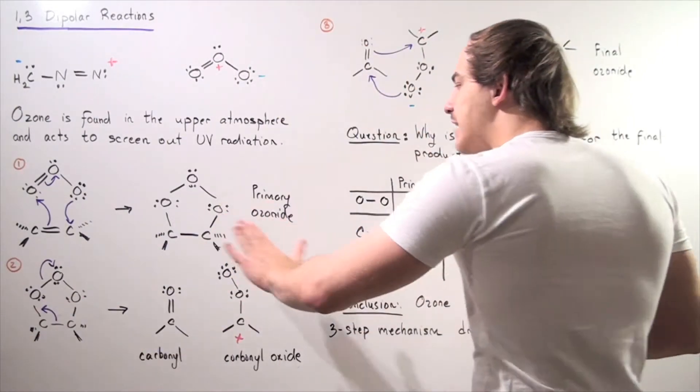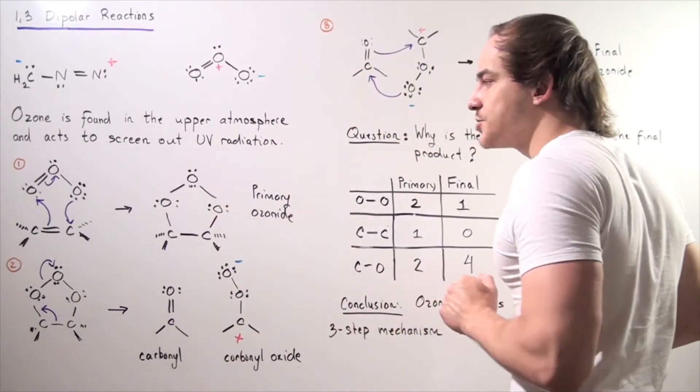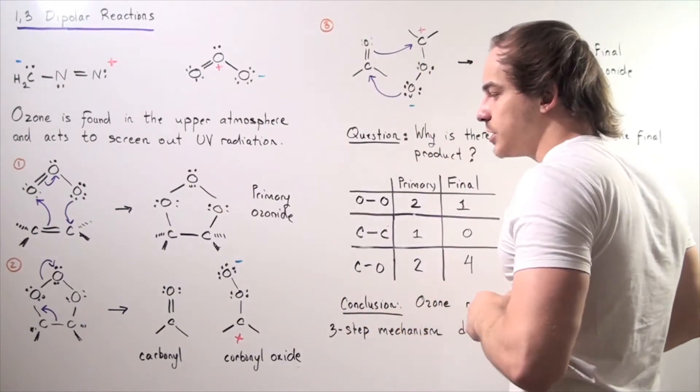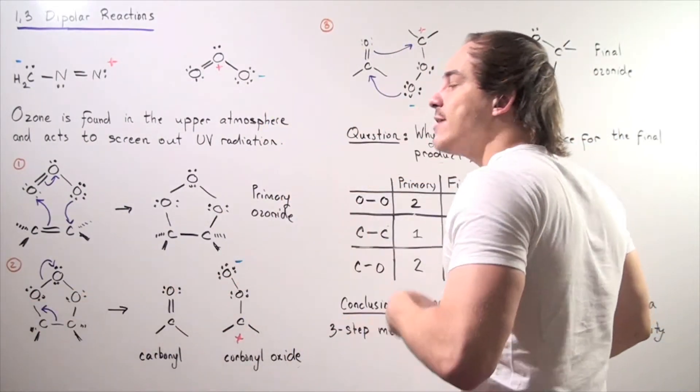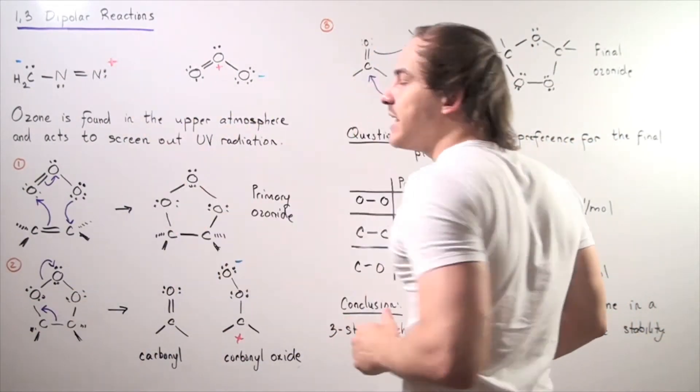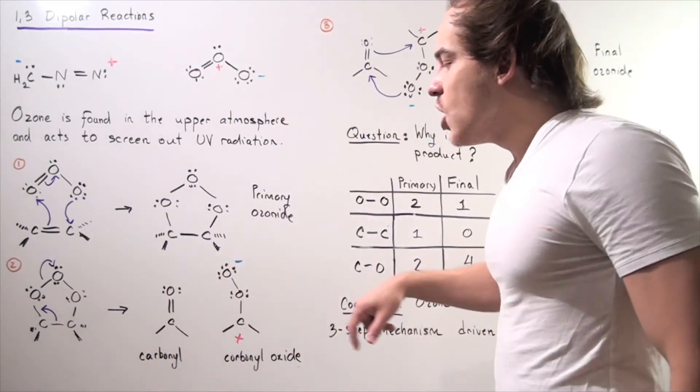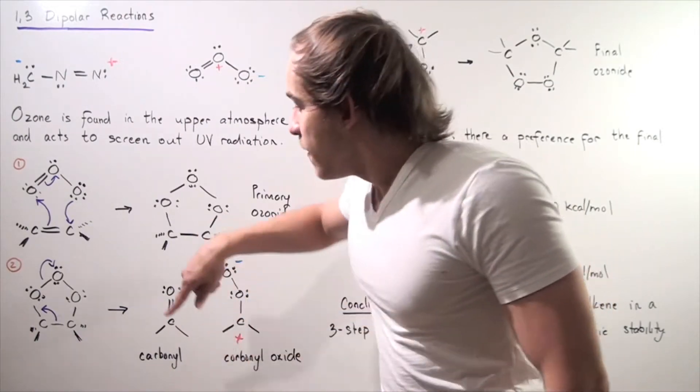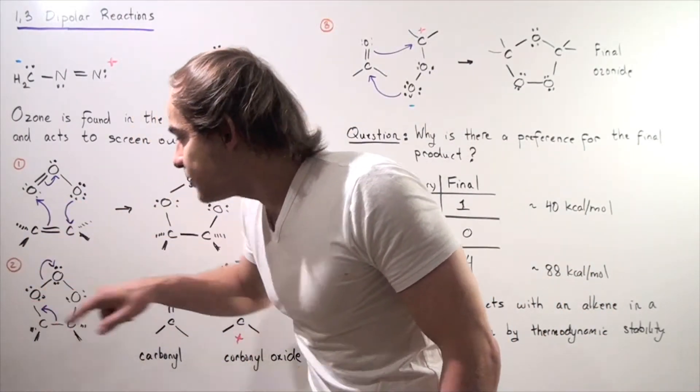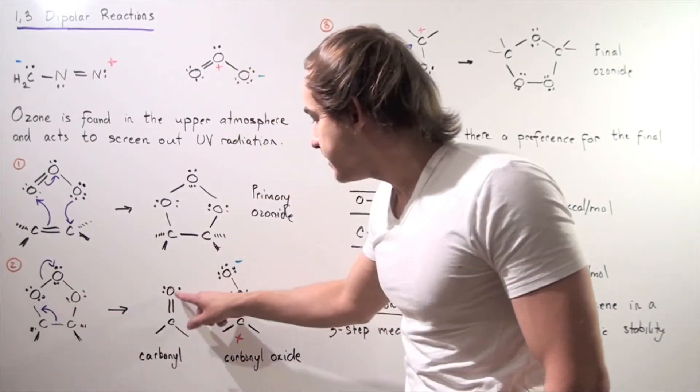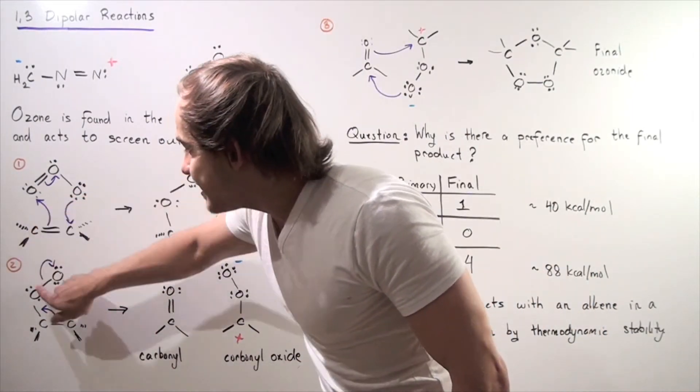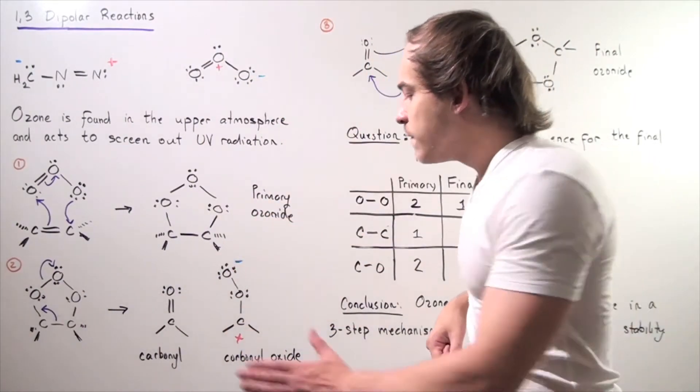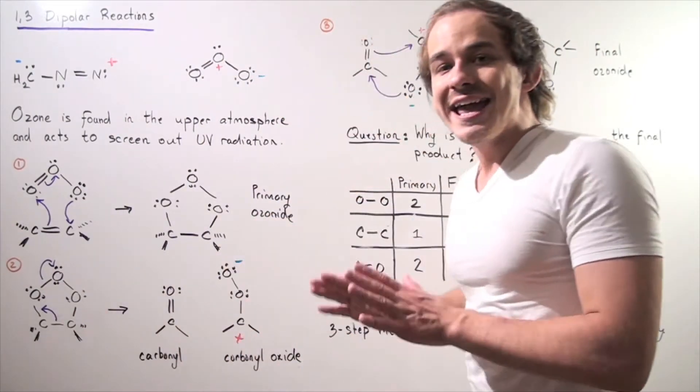Now in the second step we have a rearrangement taking place. Notice that this was a forward 1,3-dipolar reaction, and this is actually a reverse 1,3-dipolar reaction. In the second step, we have this carbon-oxygen bond breaking. This goes onto this carbon forming a pi bond and displacing this sigma bond. The lone pair of electrons now end up on this oxygen forming the following two intermediates.